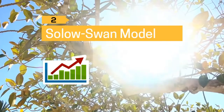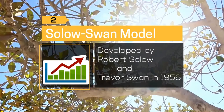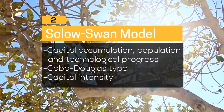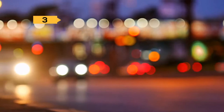The Solow-Swan model was developed independently by Robert Solow and Trevor Swan in 1956. This is a non-linear system that attempts to explain long-run economic growth by considering capital accumulation, population growth, and technological progress. The key equation of the Solow-Swan model describes capital intensity — the capital stock per unit of effective labor — where MPK is the marginal product of capital.